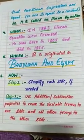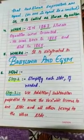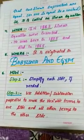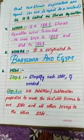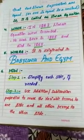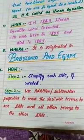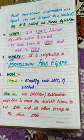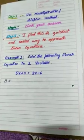The fifth point is: from where did linear equations originate? They originated in Babylonia and Egypt. The sixth point is: how to solve linear equations with one variable. Step one: simplify each side if needed. Step two: use addition or subtraction properties to move variable terms to one side and all other terms to the other side. Step three: use multiplication or division. Step four: check your answer.